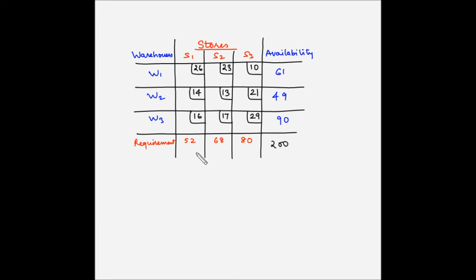The next step is to establish the initial basic feasible solution using Vogel's approximation method. The first step in VAM is to calculate the difference between the two minimum elements for each row and each column. Going row-wise first: for the first row, the lowest is 10 and the next lowest is 23, so 23 minus 10 gives a penalty cost of 13.